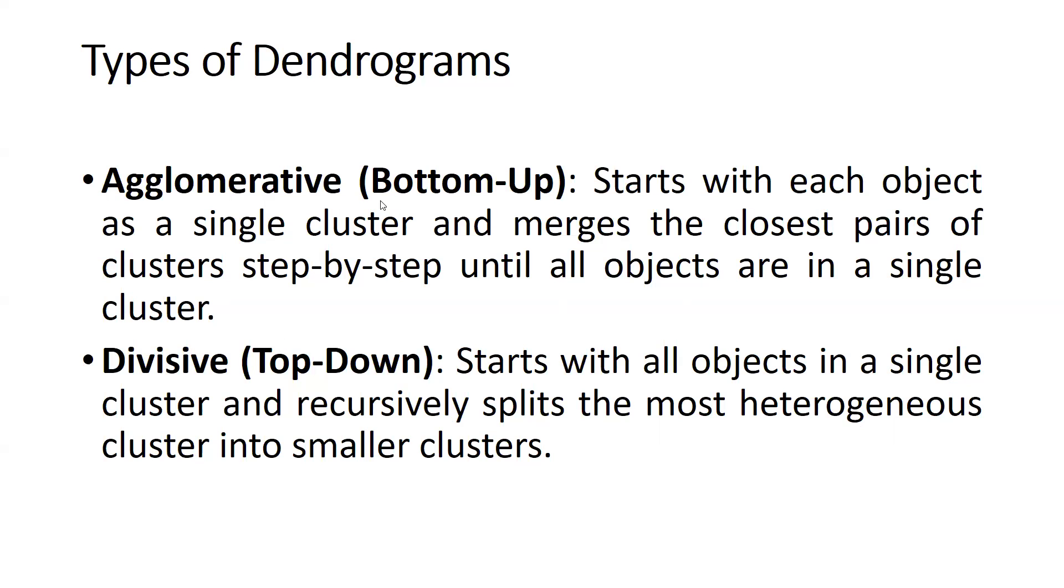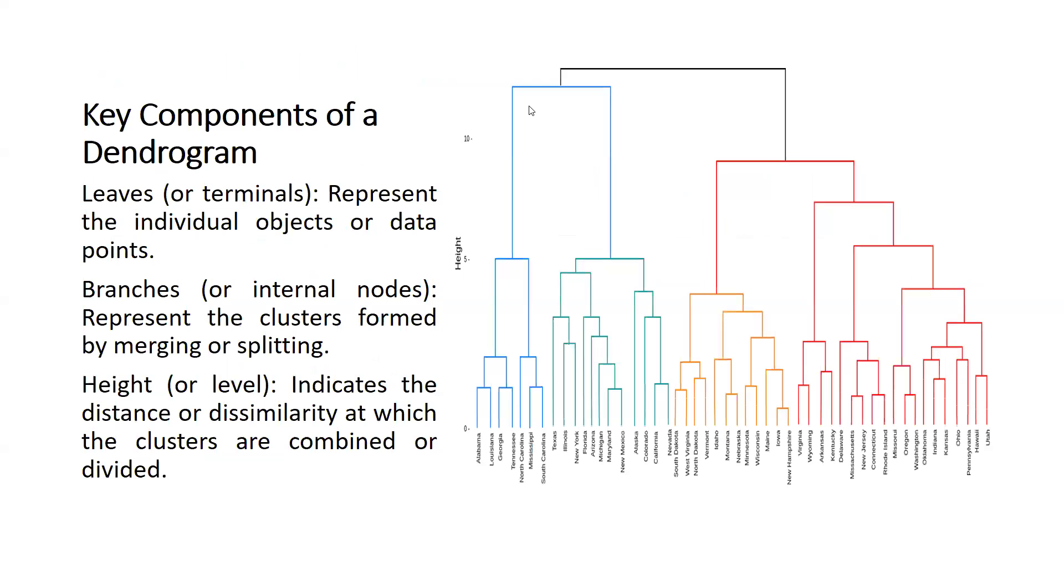Divisive top-down starts with all objects in a single cluster and recursively splits the most heterogeneous clusters into smaller clusters. We can understand with the help of this diagram.